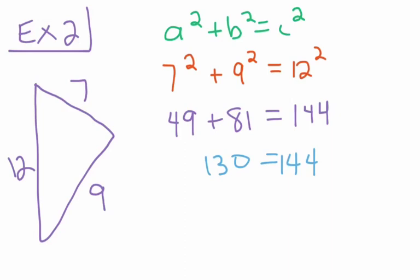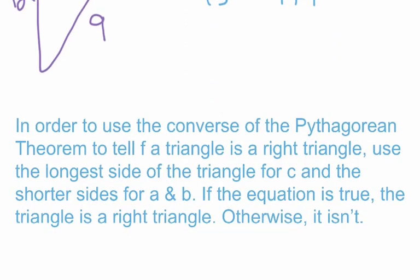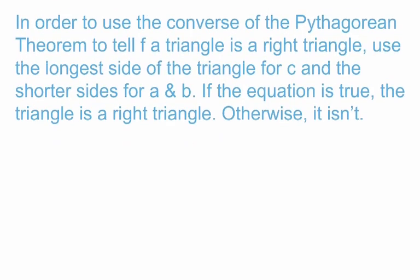All right. Now I want to give you a quick note, kind of summing up what we've been going through for examples one and two, which says in order to use the converse of the Pythagorean theorem to tell if a triangle is a right triangle, use the longest side of the triangle for C and the shorter sides for A and B.